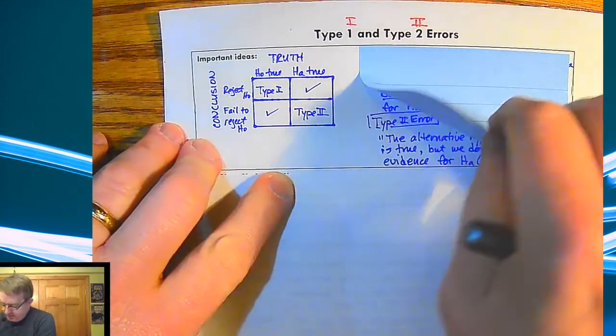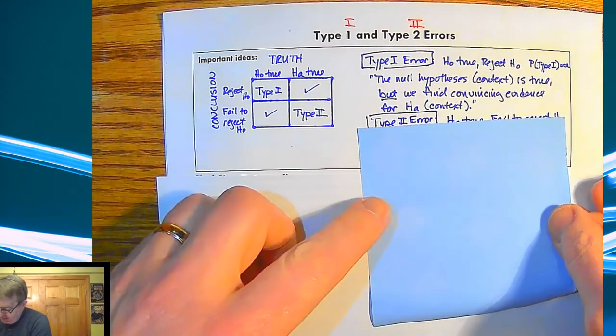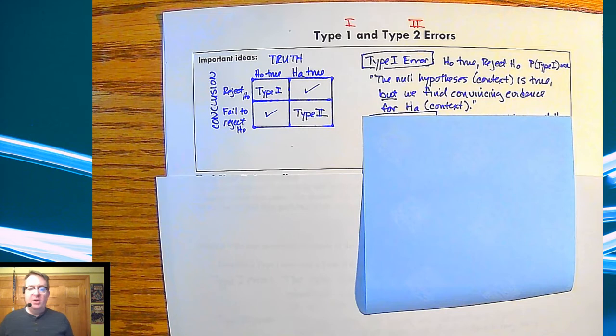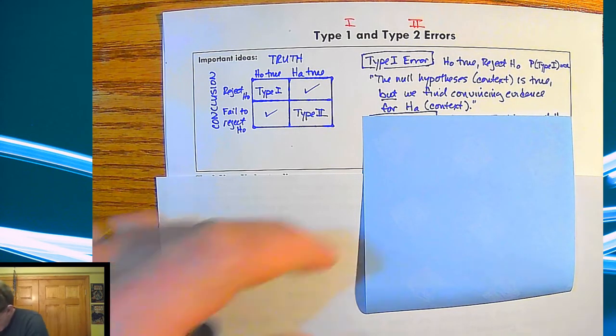Remember, the Type I error is the one that we can control. Type I error: the null hypothesis is true, we end up rejecting the null hypothesis.